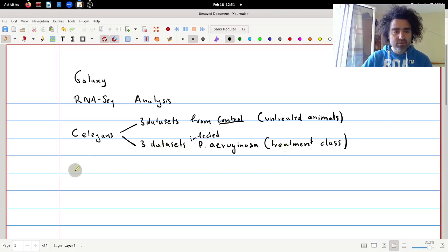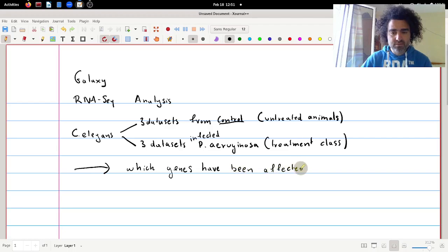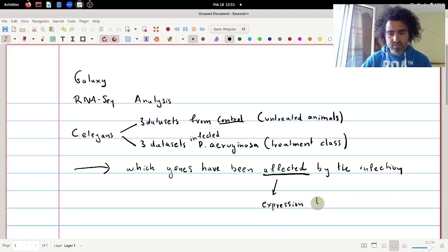And our goal for this experiment is to find out which genes have been affected by the infection. And by the word affected here I mean very clearly that their expression level either is higher or lower between the control and the infected class. So compared to the control class the expression level went up or the expression level went down.